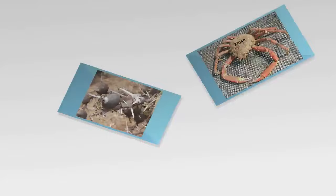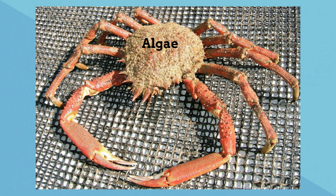The spider crab and algae: the spider crab likes to hang out in shallow areas, and the algae like to live on the back of the spider crab. The algae camouflage the spider crab, and the spider crab gives the algae a place to hang out and live.